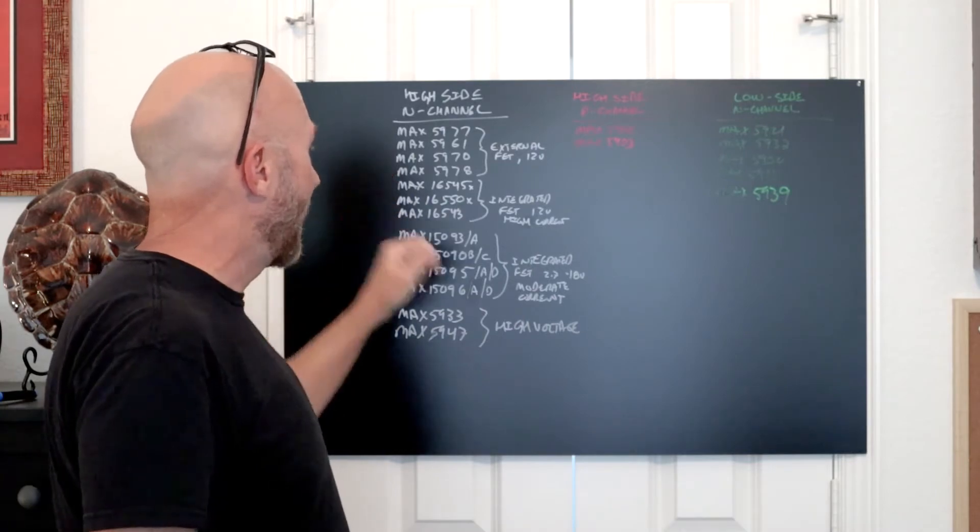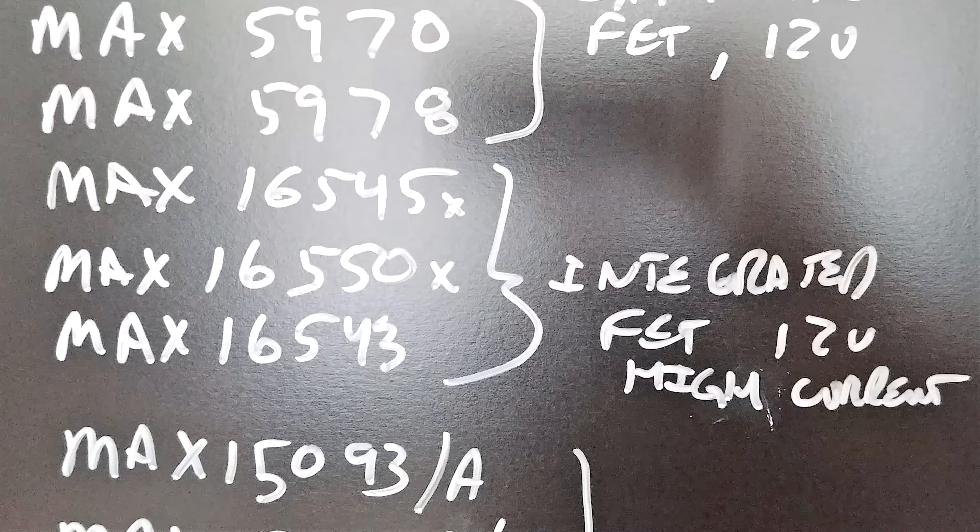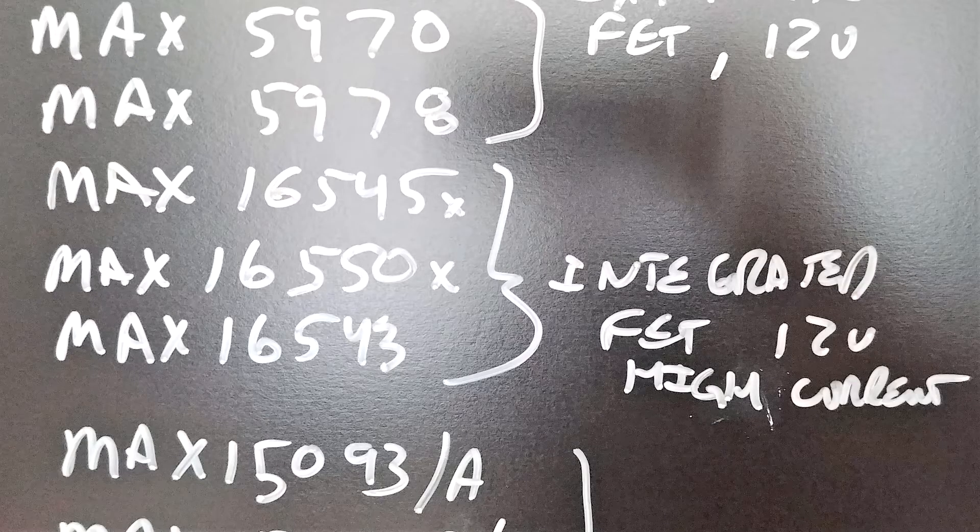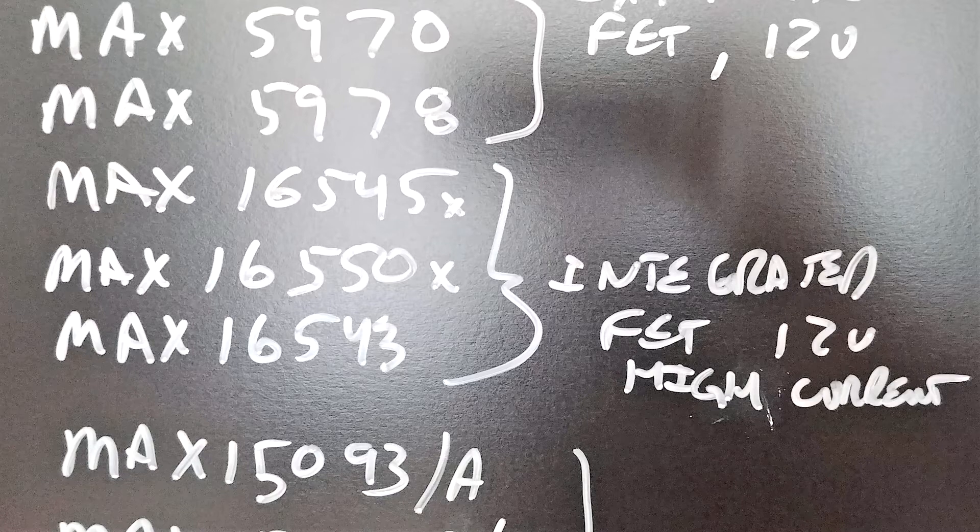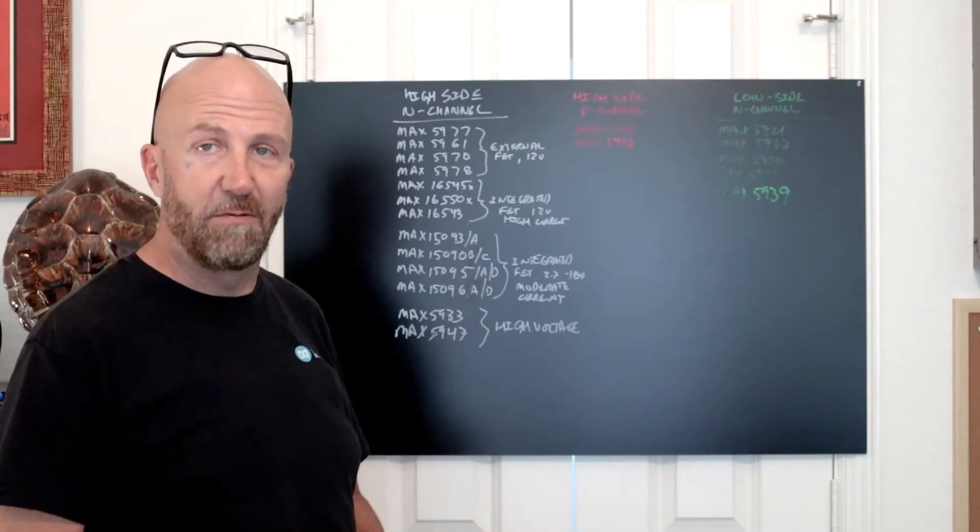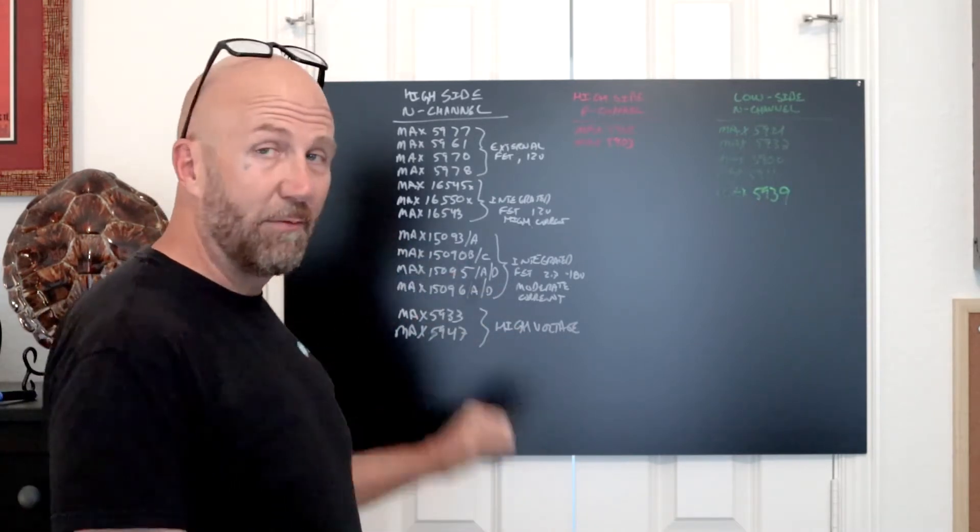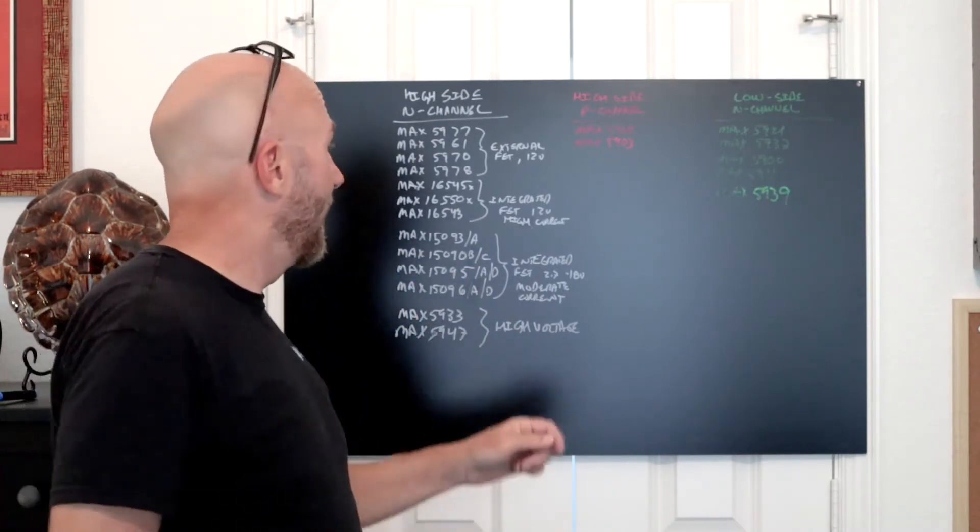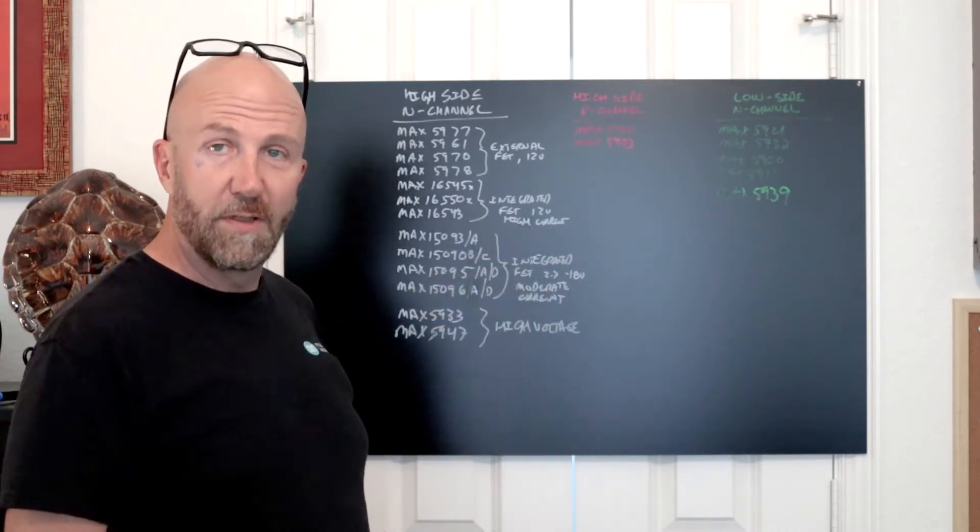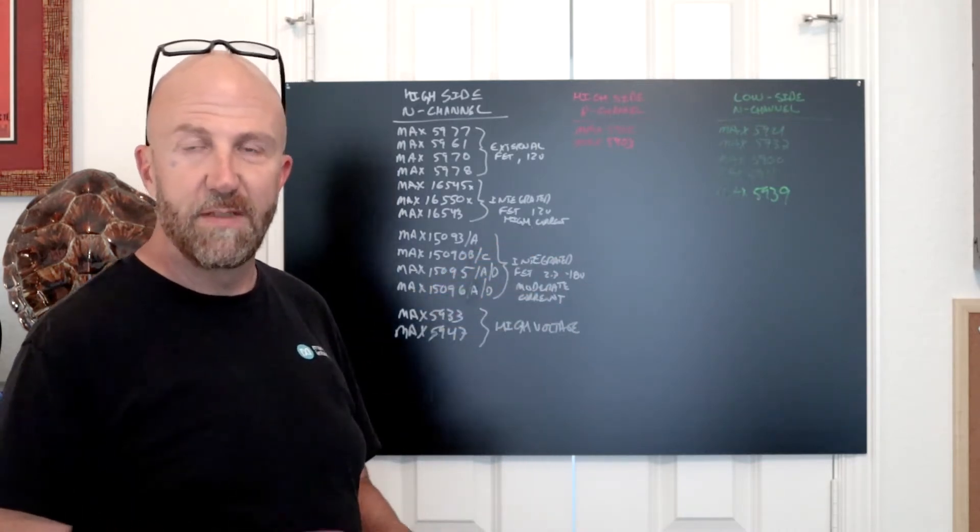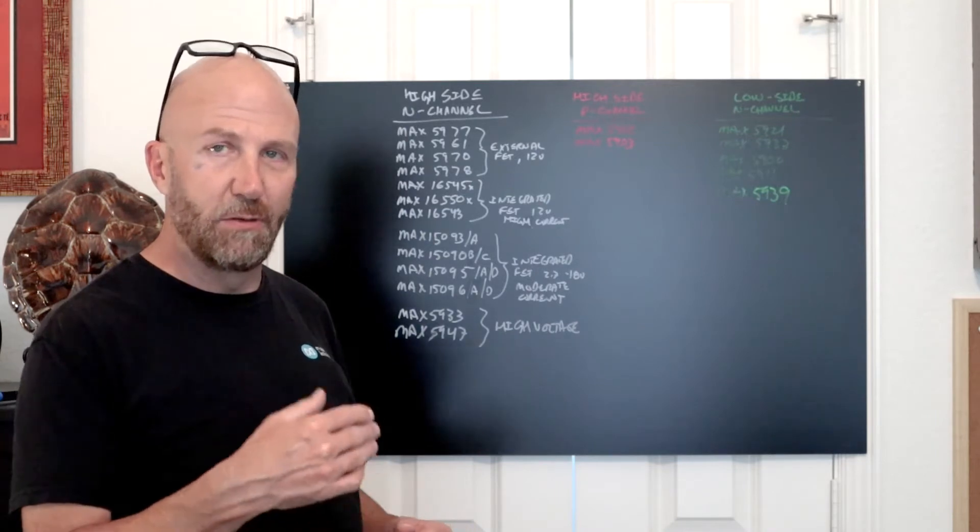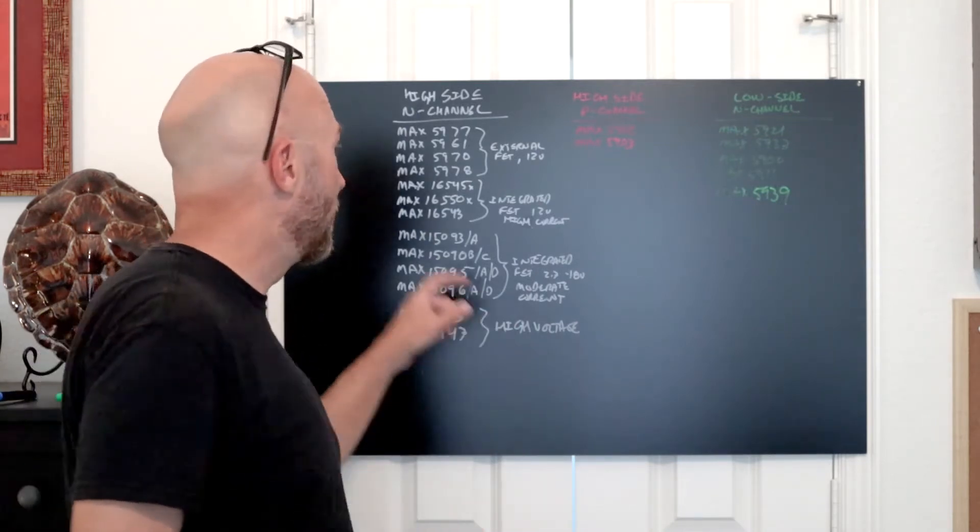Then we have the MAX16545, MAX16550, and MAX16543 series, which are very interesting parts because they include a monolithic integrated N channel FET with very good performance. Those parts also have a PMBUS interface with digital telemetry and are suitable for a 12 volt rail at high current, typically anywhere from 30 to 120 amps.